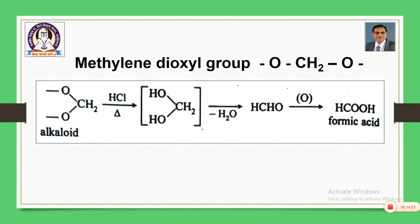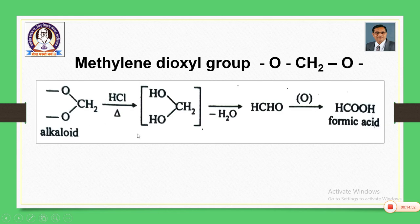Presence of a methylene dioxy group, that is —OCH₂O— group: if such a group is present, it forms an intermediate dihydroxy compound upon boiling with HCl, and this dihydroxy compound is converted into formaldehyde and then into formic acid. By estimating the amount of formic acid formed, you can investigate the presence and number of methylene dioxy groups.